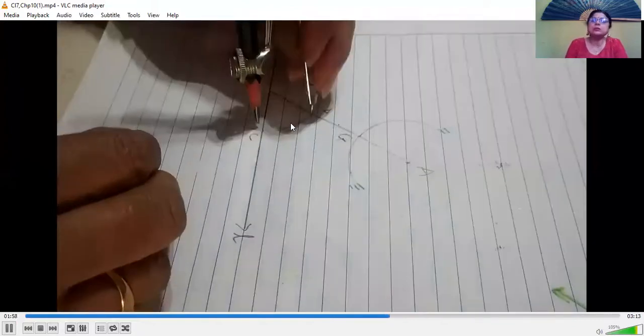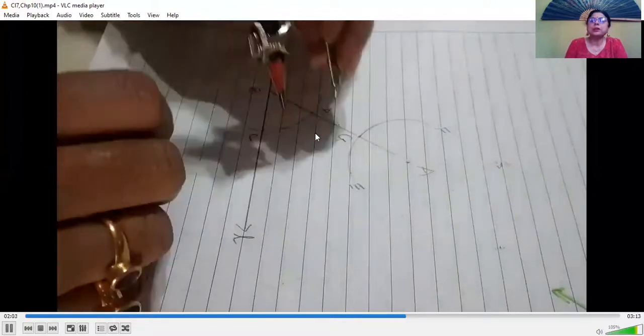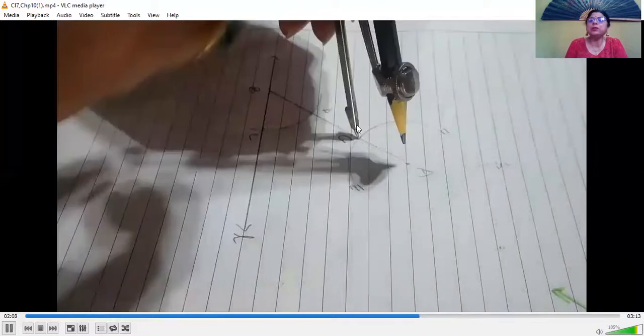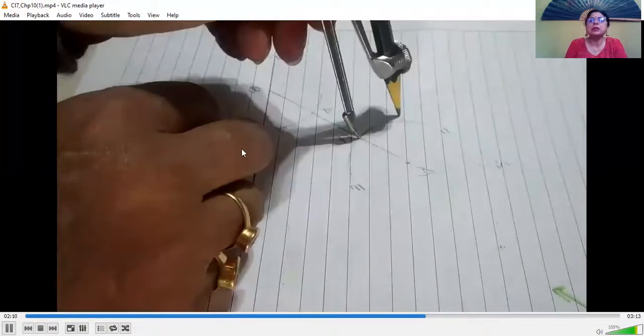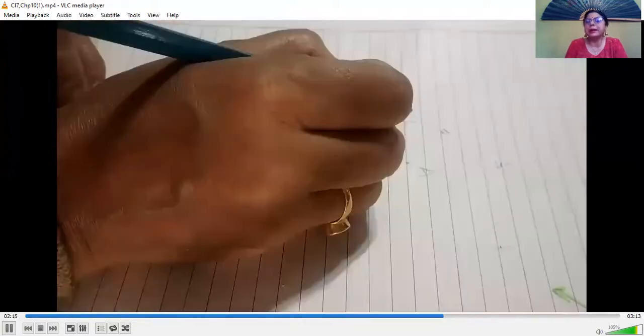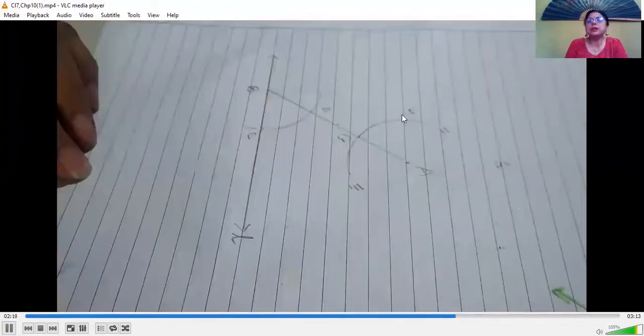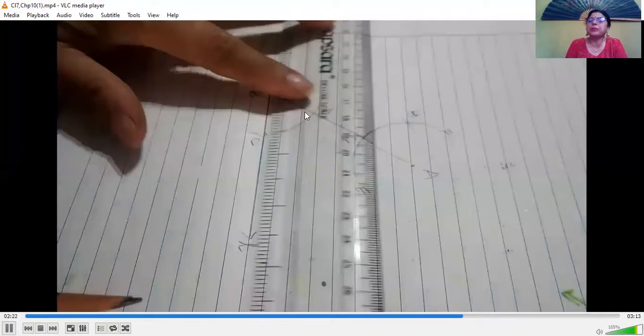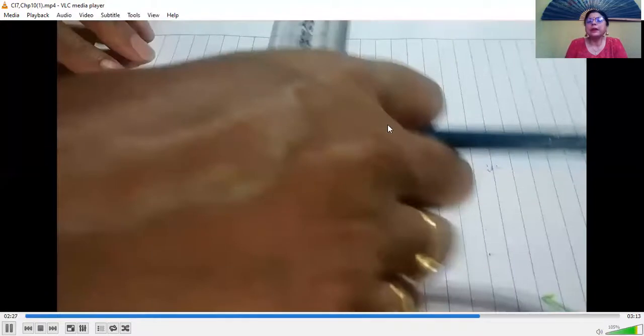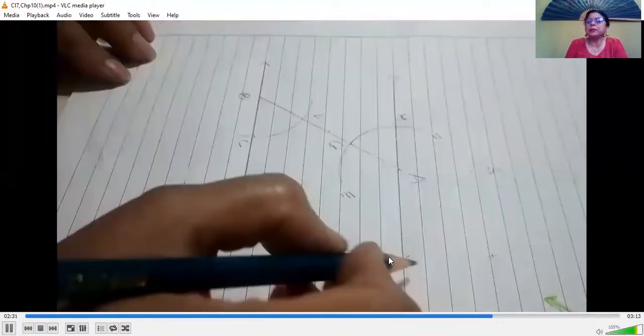Now this distance DC. We take that as the radius and with G as center and that radius DC, we draw another arc here and name it H. Now if you observe, this GH and DC are same.